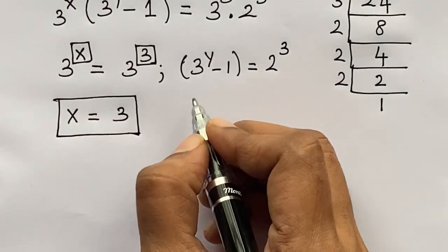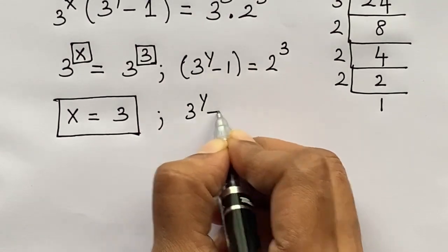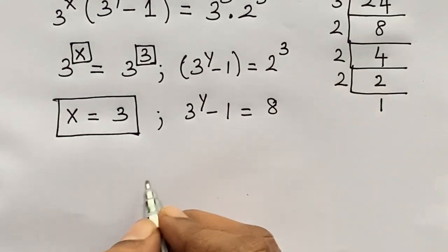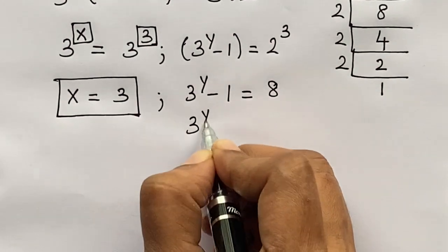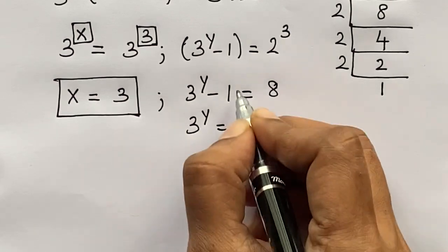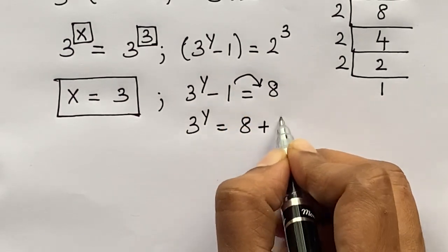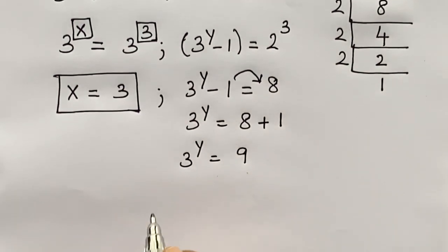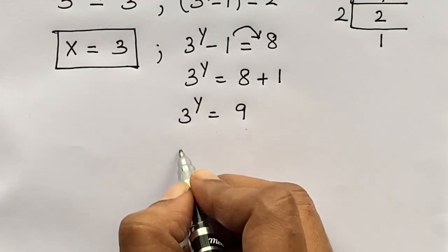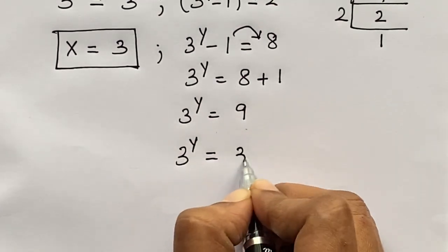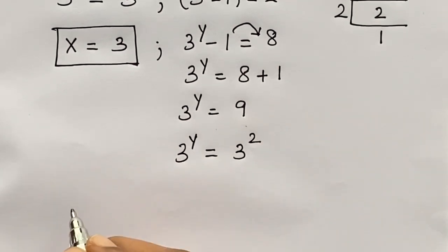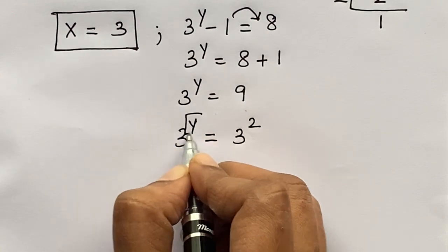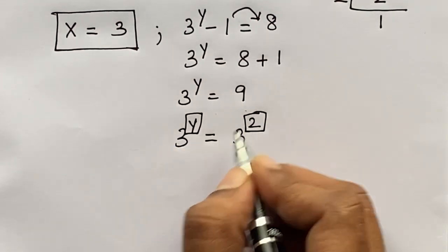Now let's solve for y. So 3 raised to the power y minus 1 equals 2 raised to the power 3 is 8. We get 3 raised to the power y equals 8 plus 1, so 3 raised to the power y equals 9. 9 can be written as 3 squared. Here the base is the same, that is 3, so we equate their exponents. We get y equals 2.